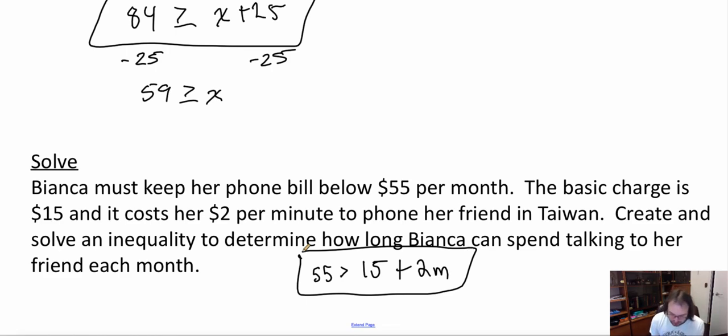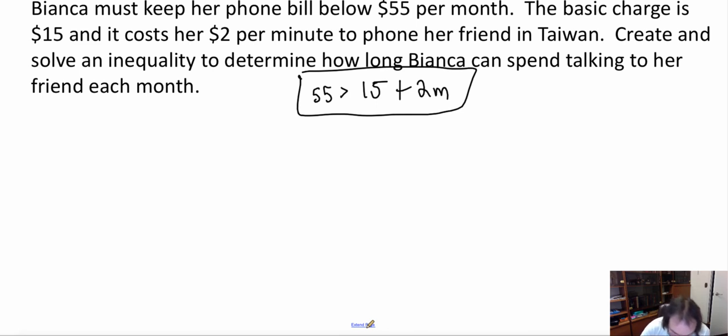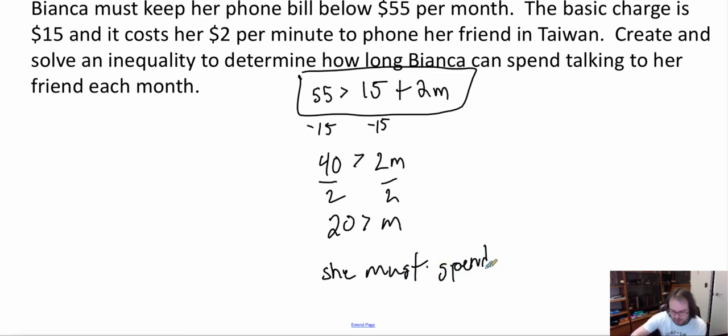We have $55 a month is my max. Well, it has to be under, so it can't equal that. And then we have 15 plus 2m. Now, we want to solve for this inequality. First thing I'm going to do is minus 15 from both sides. So, I get 40 must be greater than 2m. Now I divide both by 2. So, I get 20 is greater than m. Basically, she must spend less than 20 minutes on the phone to Taiwan.